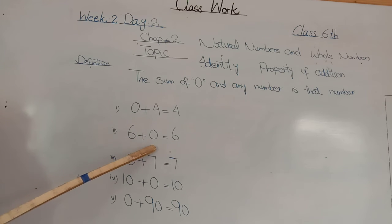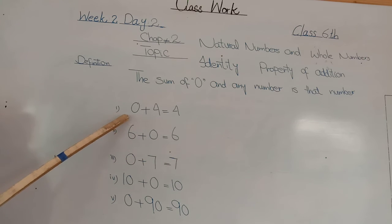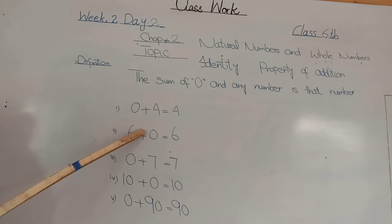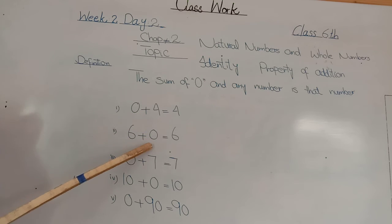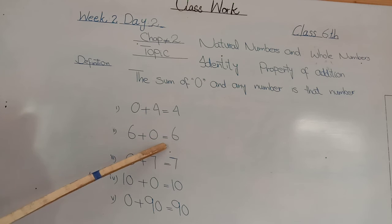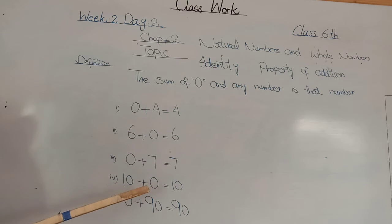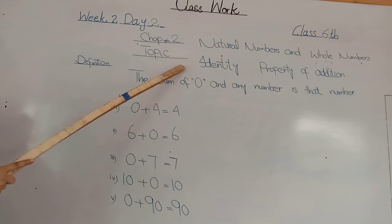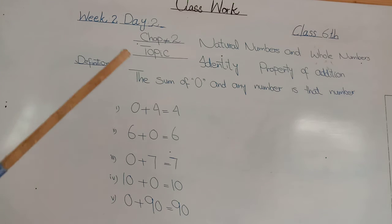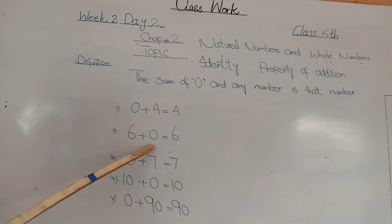Here is 6 plus 0. 6 plus 0 is equal to again 6. Yahaan par thora sa difference maine create kia hai students: if you write 0 before the number, or you write 0 after the number, the sum remains unchanged. 0 ko pehle likhne se ya 0 ko baad mein likhne se farak nahi padta. Identity Property of Addition remains the same whether you put the 0 before or after the number.